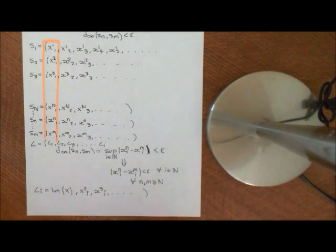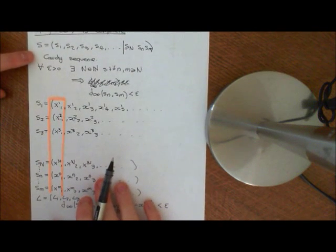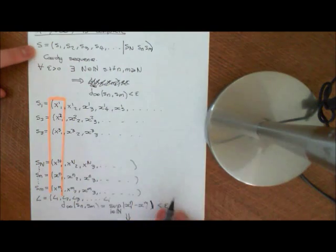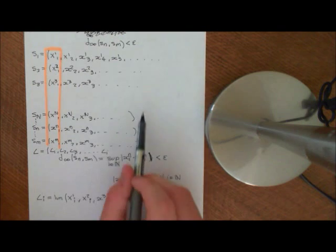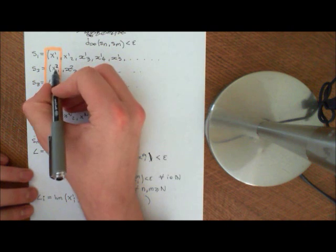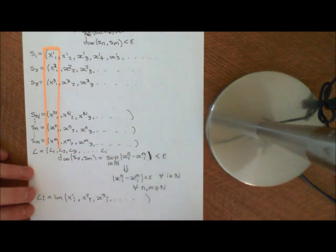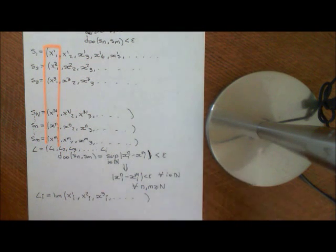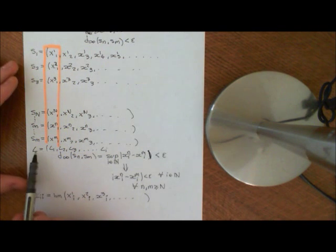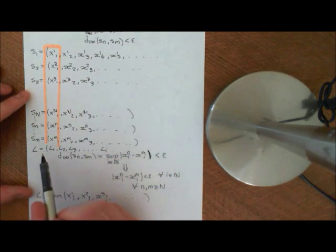Welcome back. I've just said that if we've got any hope of this sequence S1, S2, S3 onwards, which we've said is a Cauchy sequence of sequences in L-infinity, converging in the metric space L-infinity with the metric D-infinity, then this sequence better well converge point-wise. So what we need to do is show that each of these sequences, constructed by taking the i-th term from our sequence of sequences, must all converge to some real number.